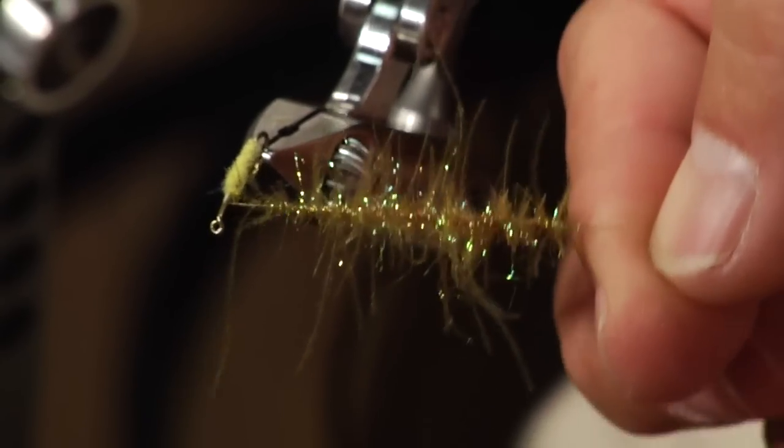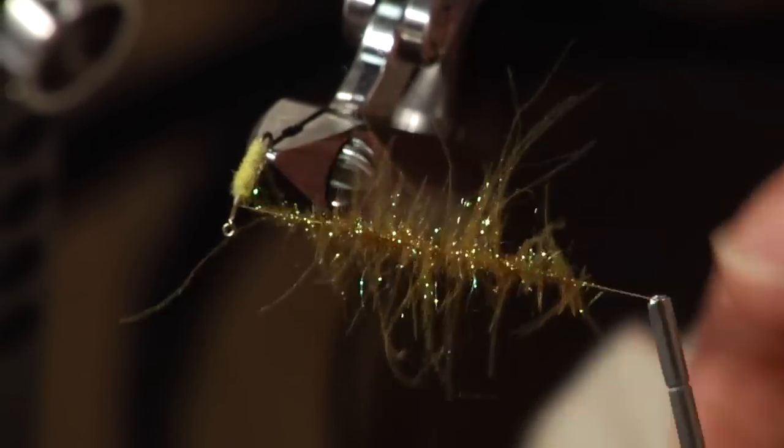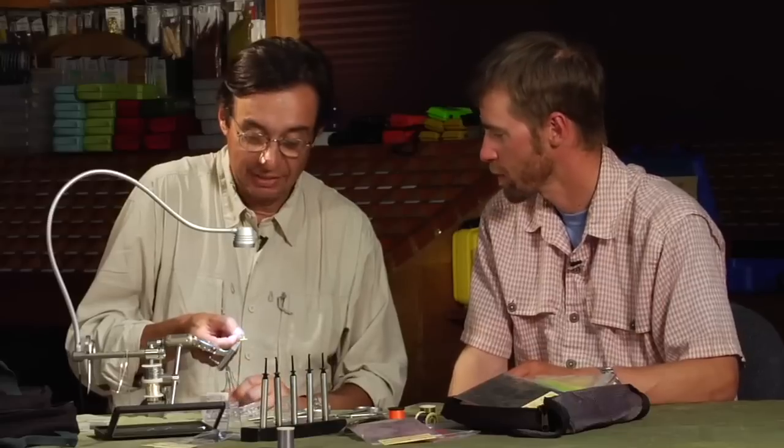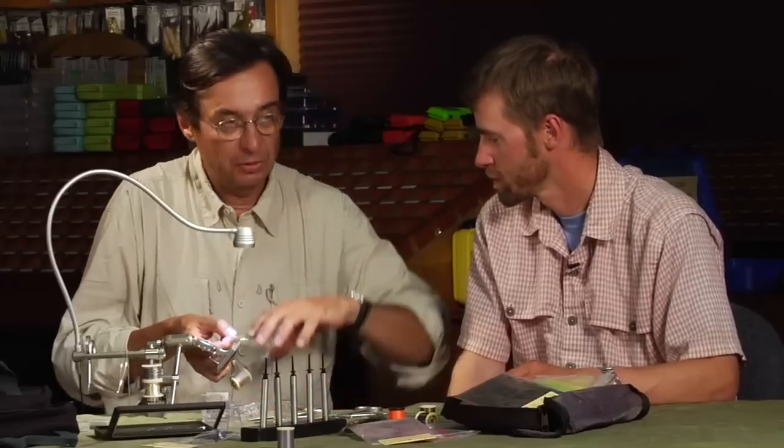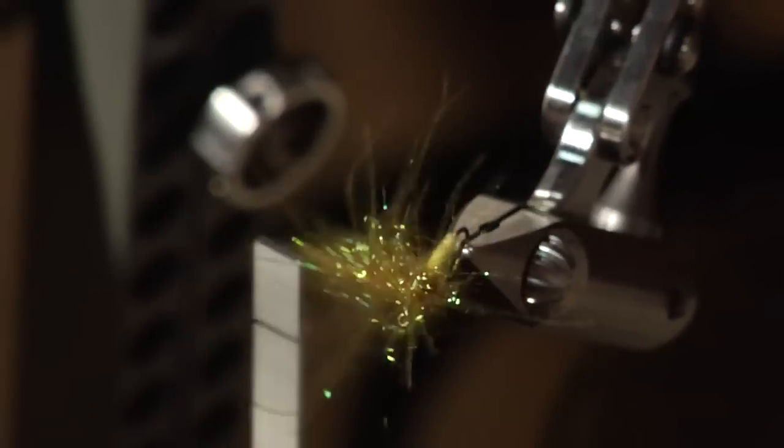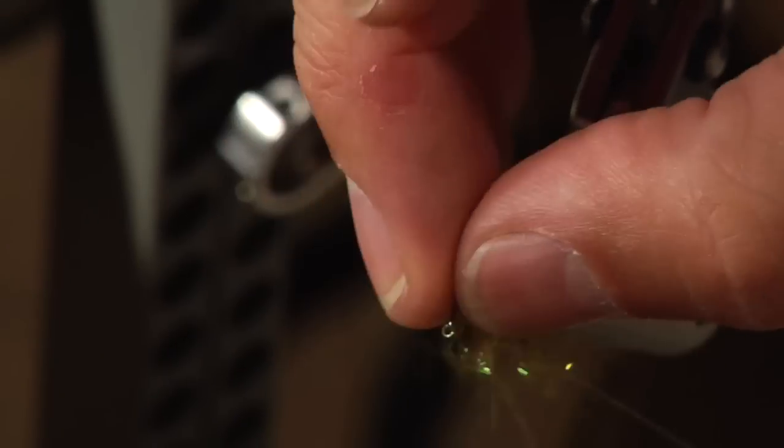And as you see, the dubbing here went very close to the thread and leaves all the barbs separate. Leaves the CDC fibers separate. So you can really create more movement in it. So you just go like this. Help the fibers to go backwards to create the shape of the wing.